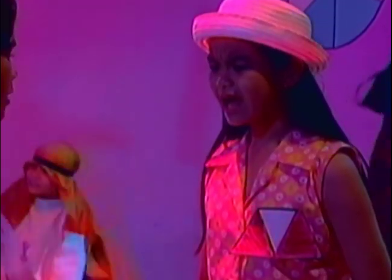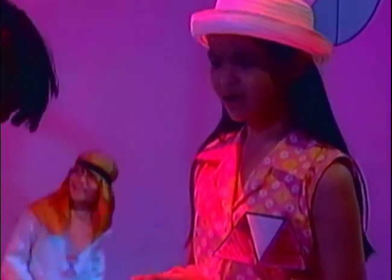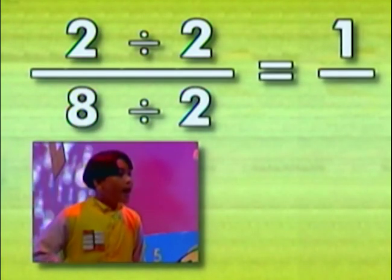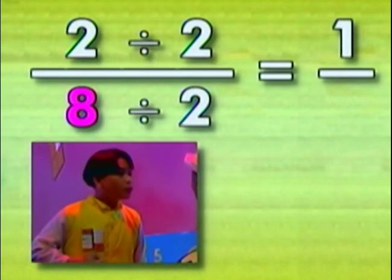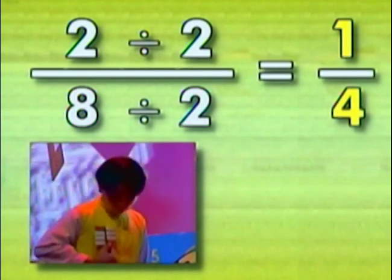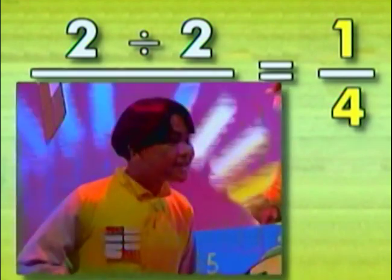Teka, hindi pa lowest-term yung damit mo ah? Oo nga no, two-eights. May ditong yung divide sa two. Kaya, two divided by two is equal to one. At eight divided by two is equal to four. One-fourth ang lowest-term ng two-eights.